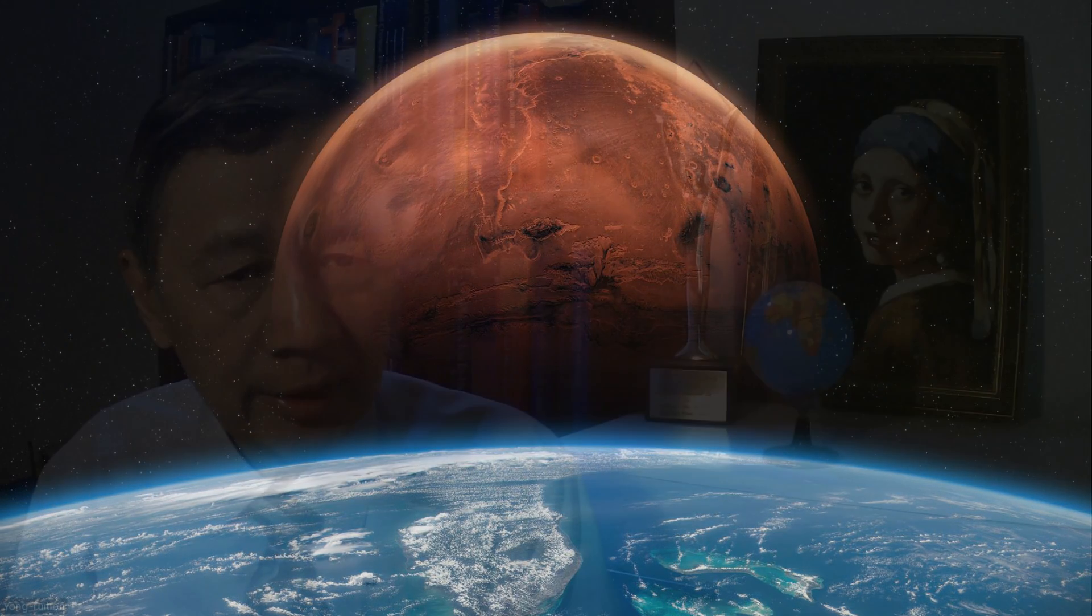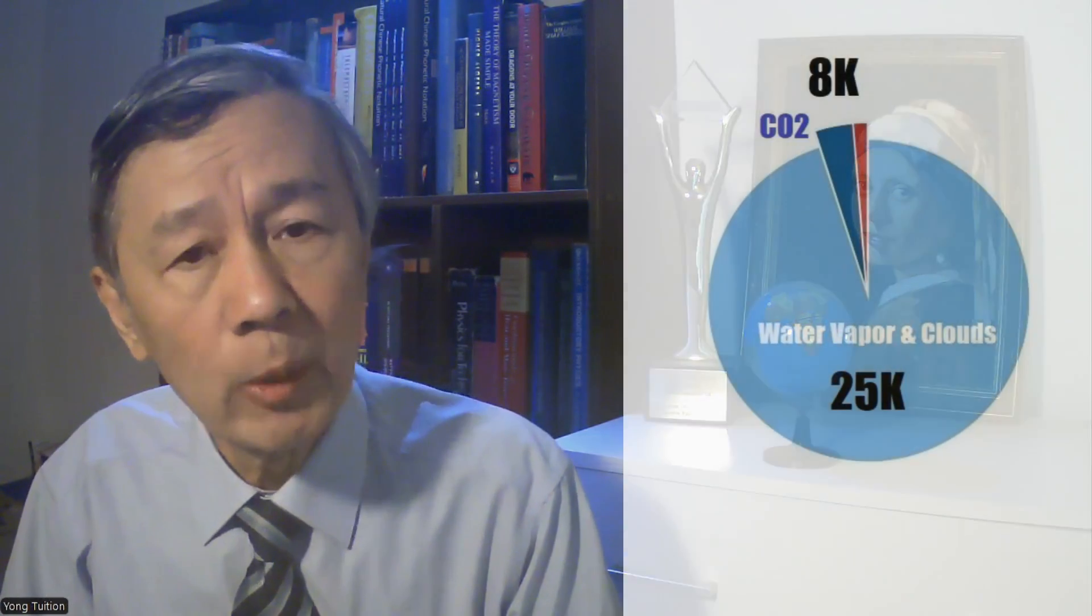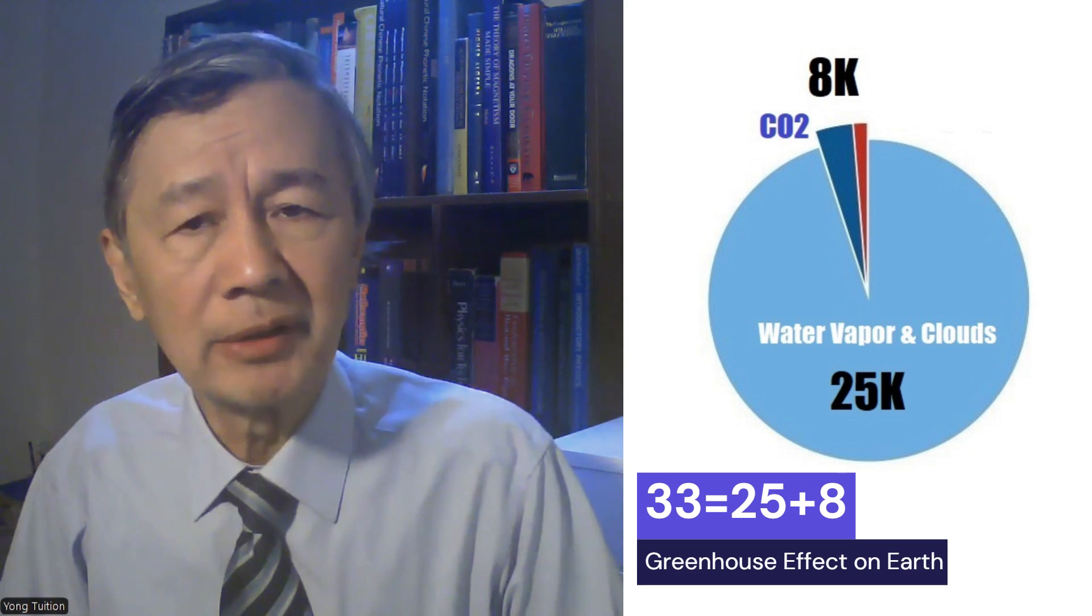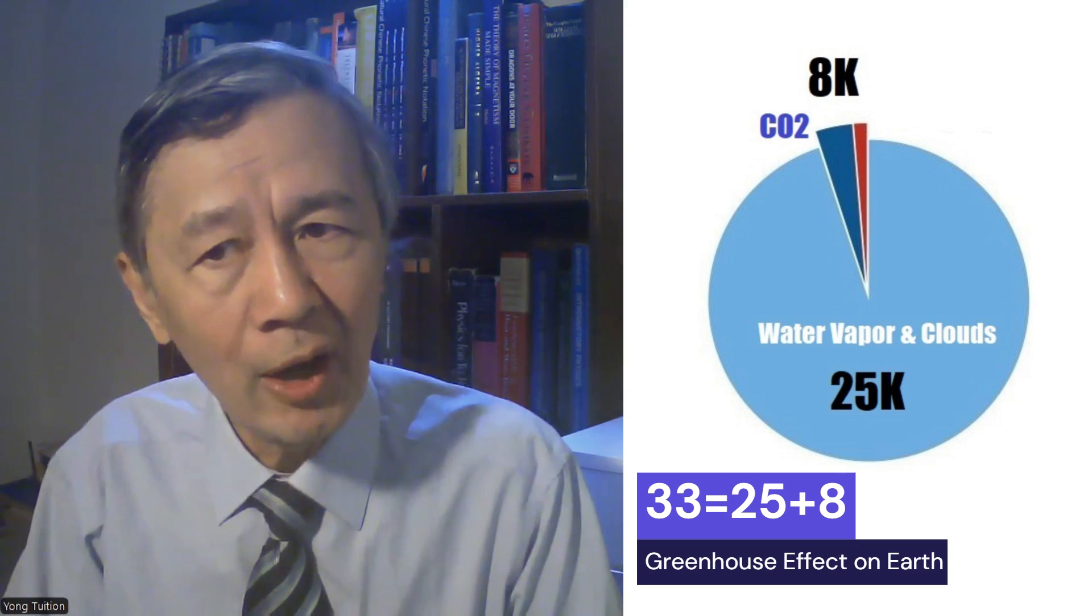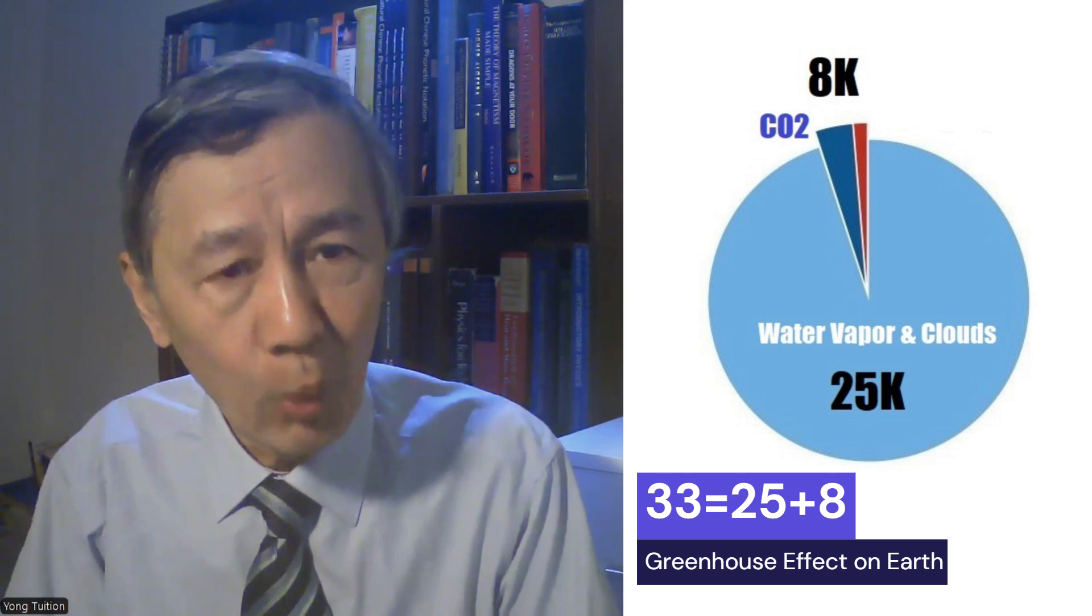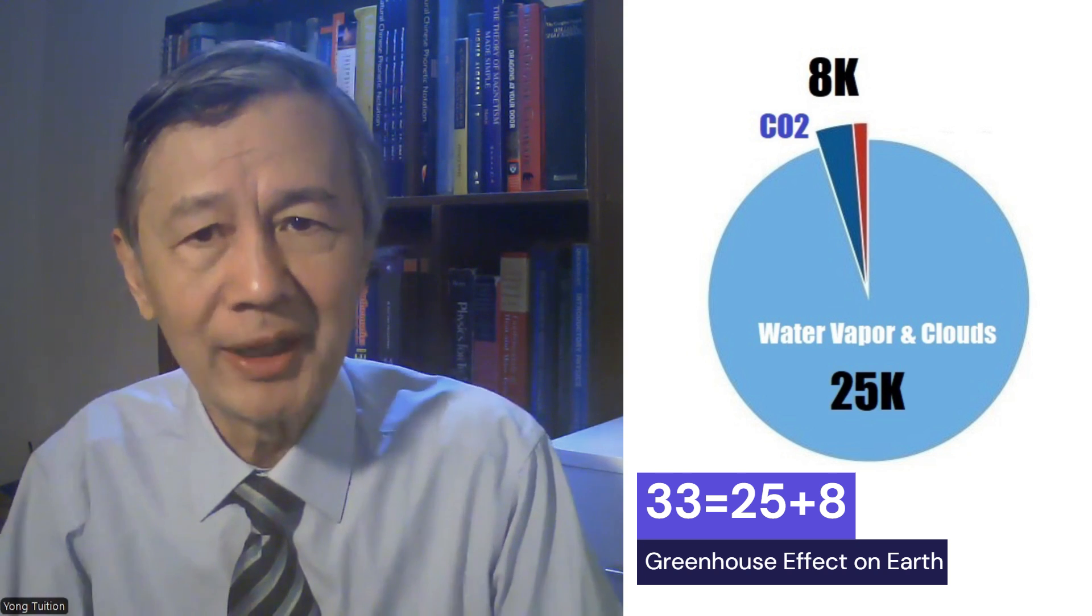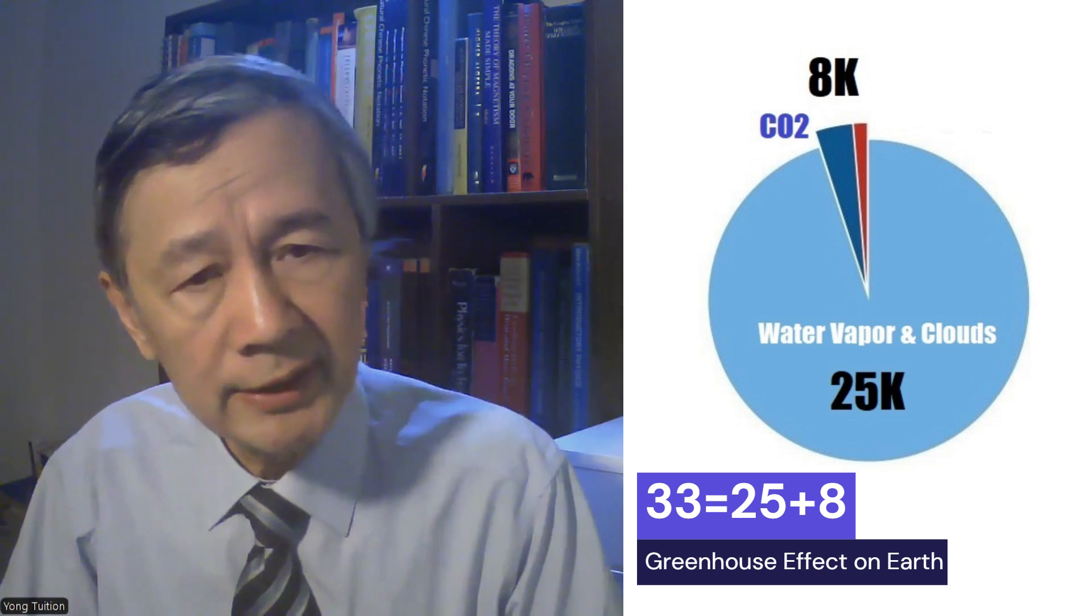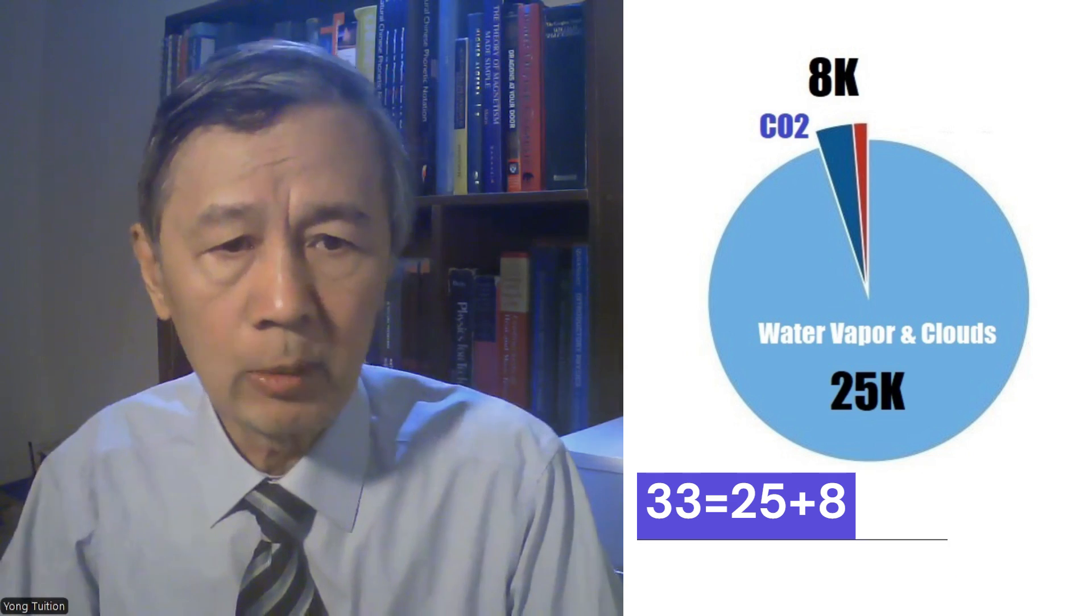It is said most of the Earth's greenhouse effect comes from water vapor and clouds, which together account for about 25 Kelvin of the 33 Kelvin warming on the Earth by the greenhouse effect, which implies the contribution from CO2 is less than 8 Kelvin.